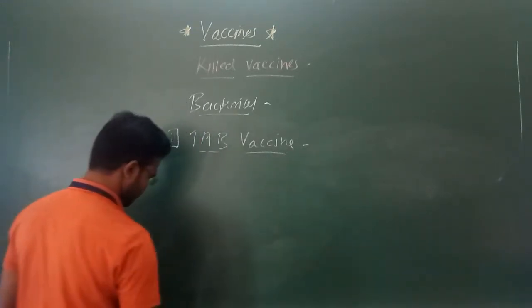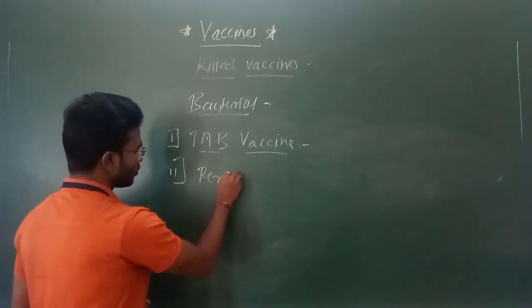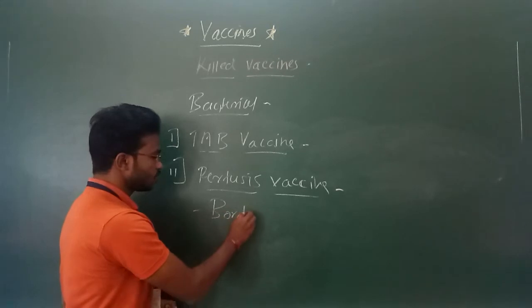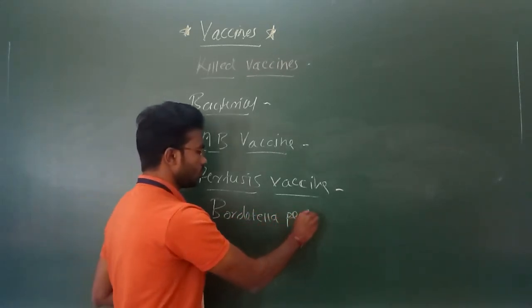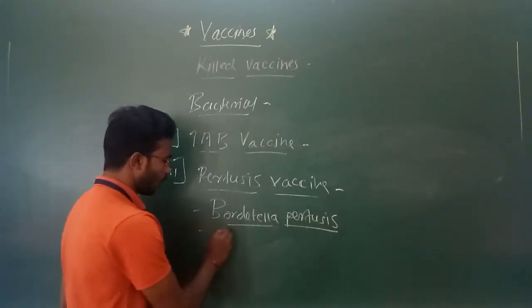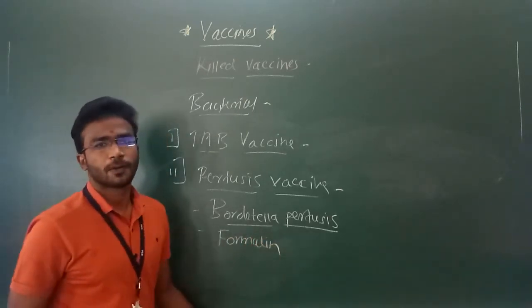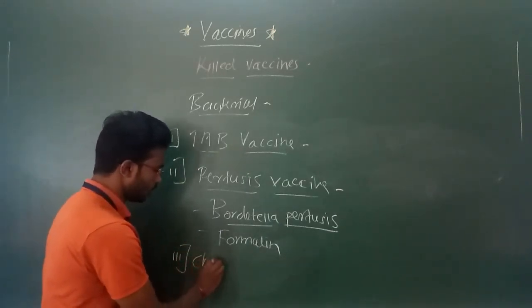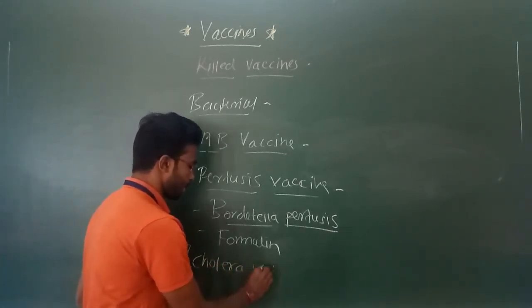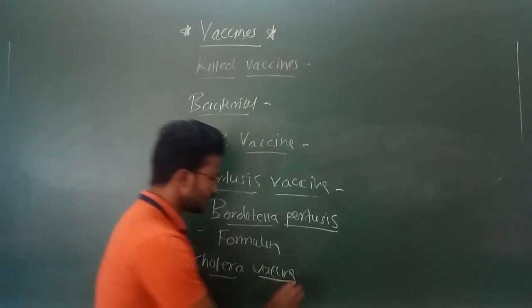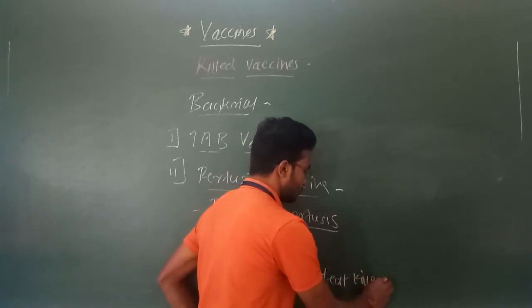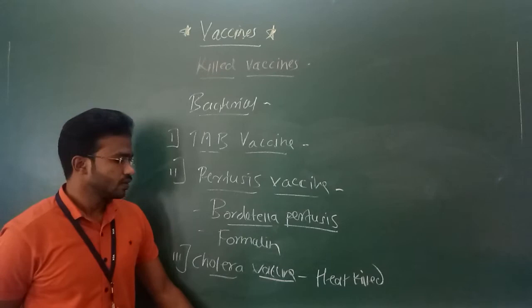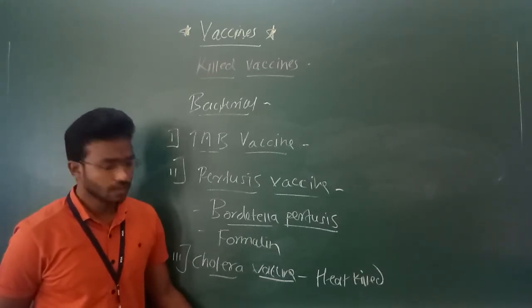The next example is the Pertussis vaccine. In this, Bordetella pertussis is the pathogenic organism, and it is inactivated with the help of formalin. Another example is the cholera vaccine, which is also an example of a heat-killed vaccine. A suspension of Vibrio cholerae is prepared, and that suspension is heated so as to prepare this heat-killed cholera vaccine.